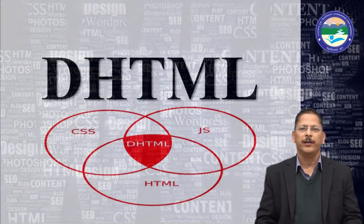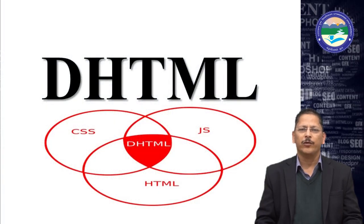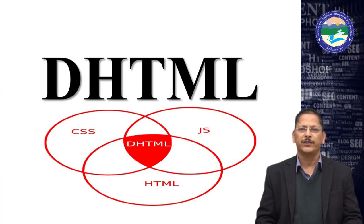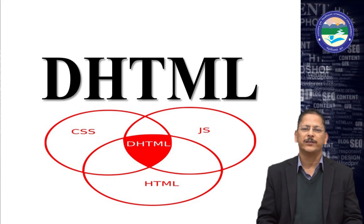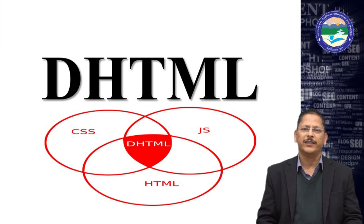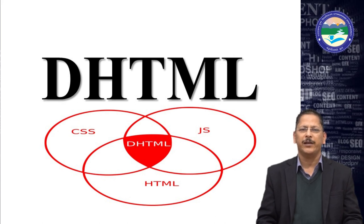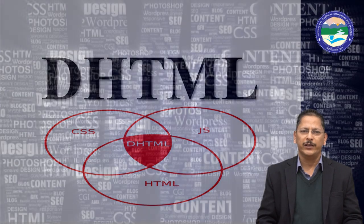First of all, DHTML. DHTML is basically a combination of CSS, JavaScript, and HTML. You can see this diagram — this circle shows that DHTML is the middle part, where HTML, JavaScript, and CSS all intersect. So DHTML is a combination of JavaScript, CSS, and HTML. We can say it stands for Dynamic Hypertext Markup Language, or Dynamic HTML.